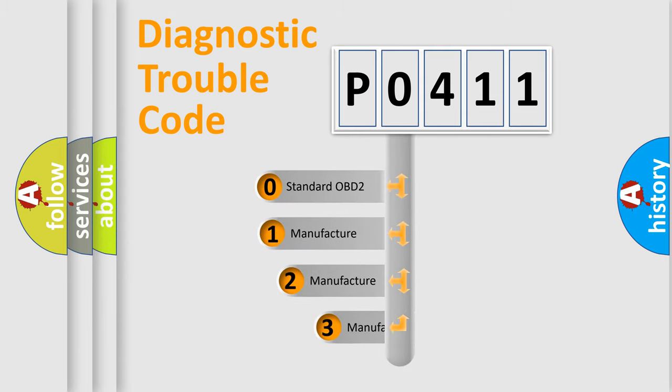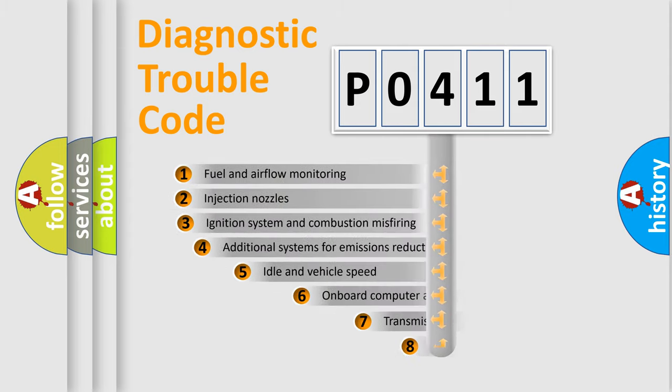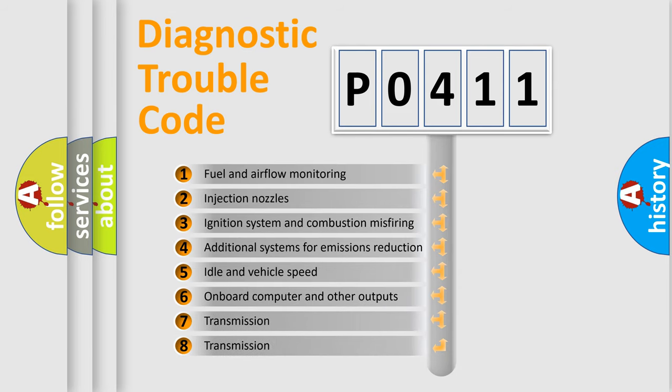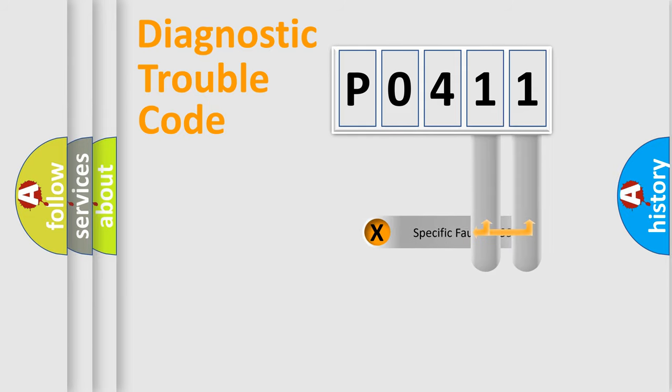If the second character is expressed as zero, it is a standardized error. In the case of numbers 1, 2, 3, it is a car-specific error. The third character specifies a subset of errors. The distribution shown is valid only for the standardized DTC code. Only the last two characters define the specific fault of the group.